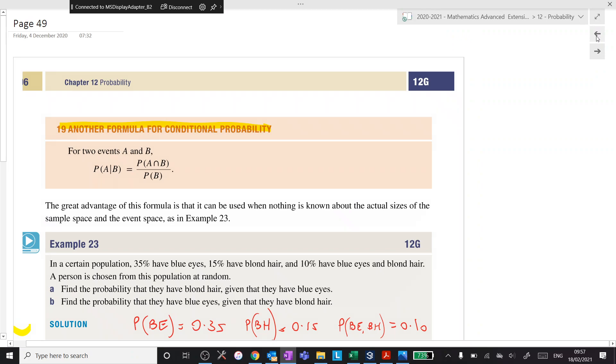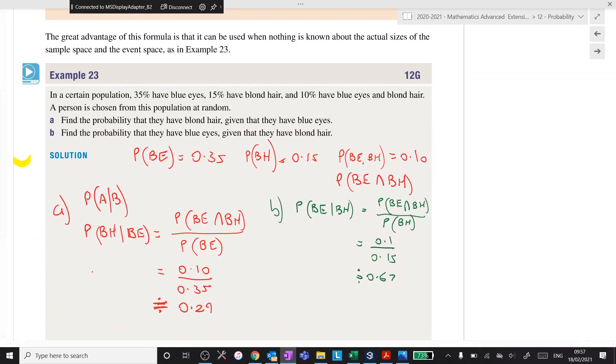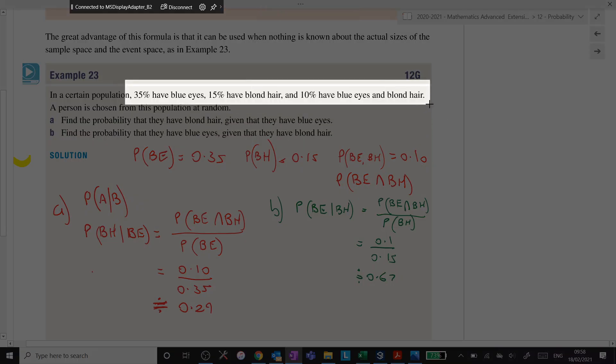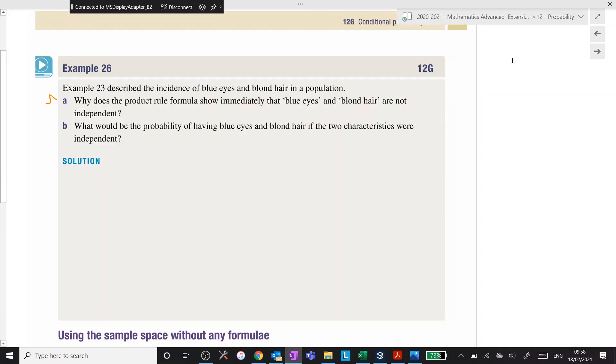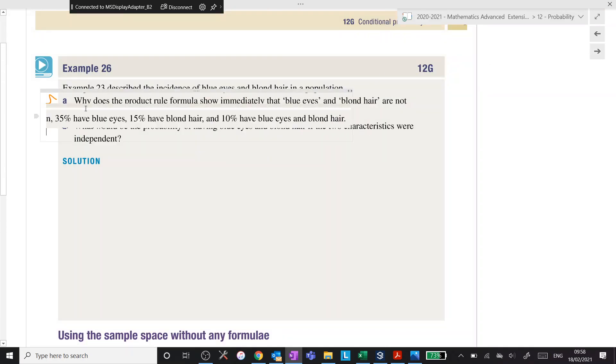All right, example 23, we're using the data from that. We've got the blue eyes, blonde hair, and blue eyes and blonde hair percentages. I'll just copy that and we'll go back over to this one and paste that up the top. There we go.